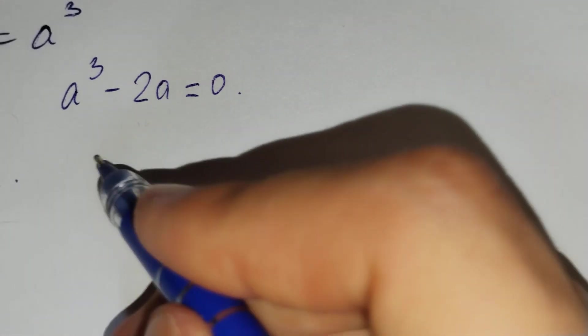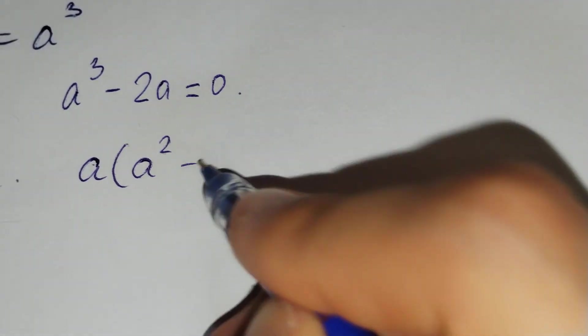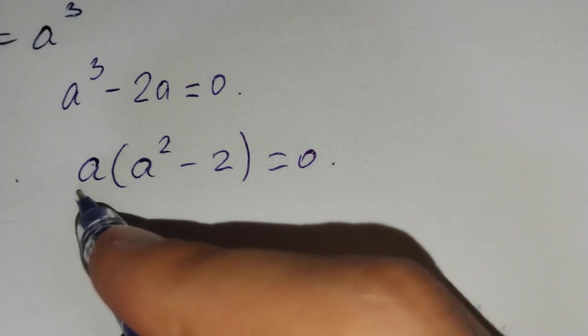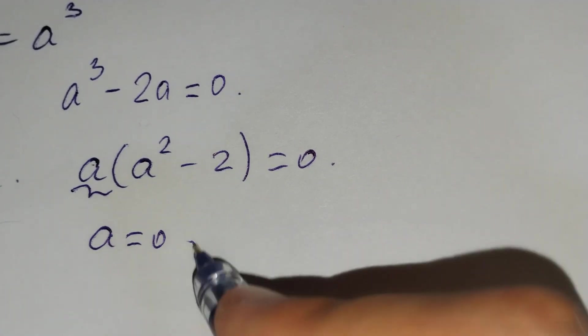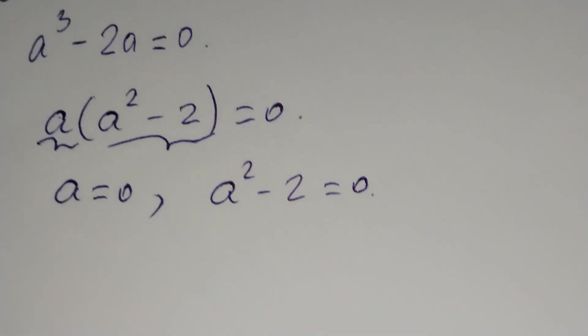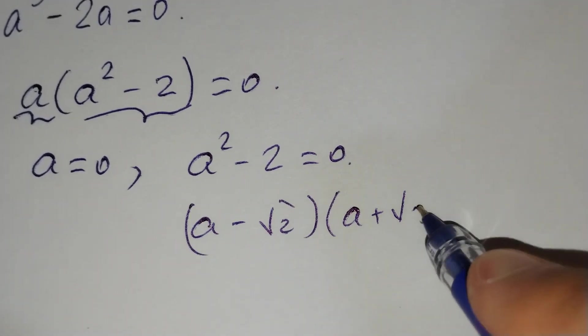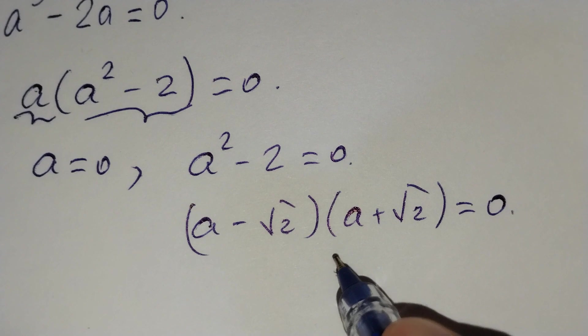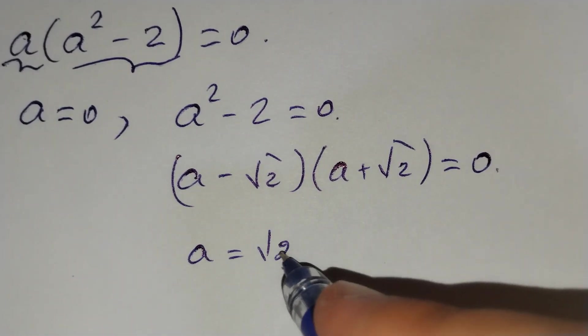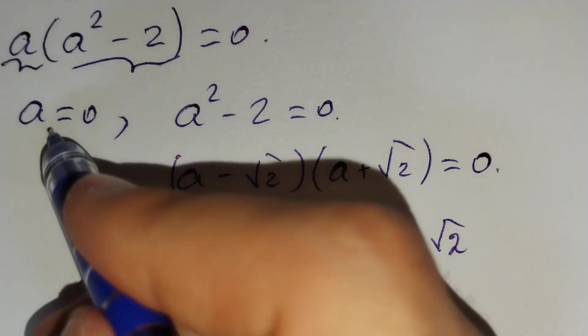We should factor this: a times a squared minus 2 equals zero. From here, a equals zero, or a squared minus 2 equals zero. Using the quadratic formula: a minus square root of 2 times a plus square root of 2 equals zero, and a equals square root of 2 and a equals negative square root of 2.